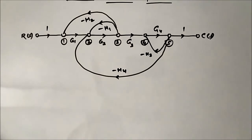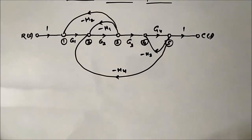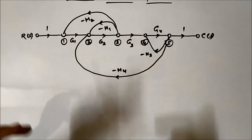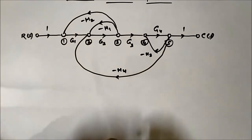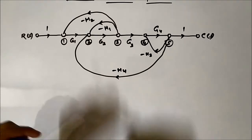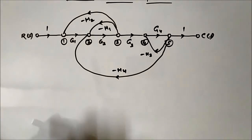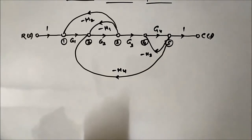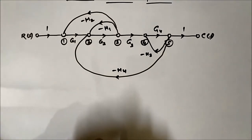In the previous video, we discussed some of the basic concepts associated with the signal flow graph — the nodes, forward paths, loops, forward path gain, loop gain, and the concept of non-touching and touching loops. In this video, we are going to apply those concepts to understand the determination of the closed loop transfer function using Mason's gain formula.